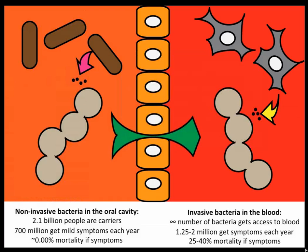For that, we need a system — a human pathogen called Streptococcus pyogenes. It lives in the oral cavity of about 30% of humans, so it's very common. About 700 million people get mild infections every year — this is strep throat. This disease is not very deadly, and it's very susceptible to penicillin, which makes it cheap to do experiments on.